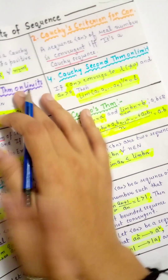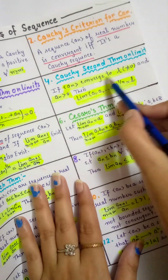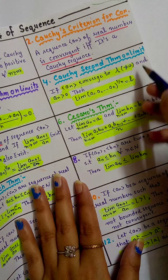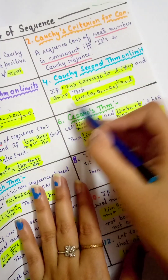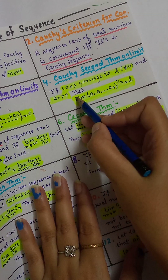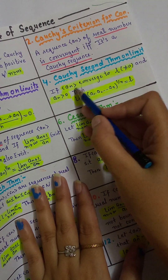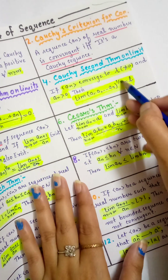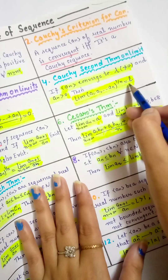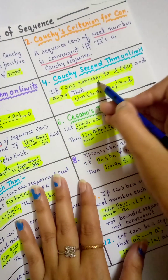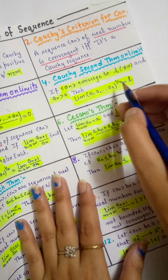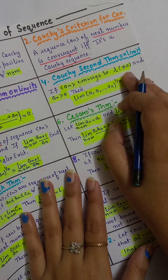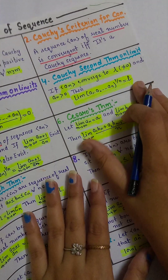Next, Cauchy's second theorem on limit. If AN converges to L, and L is not equal to 0, and AN is positive, then limit n tends to infinity of (A1 · A2 · ... · AN)^(1/N) equals L.